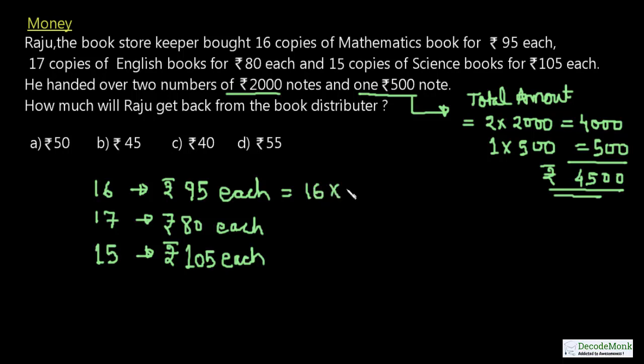The total amount required for math books is 16×95. Calculating: 16×5 = 80, and 16×9 = 144, plus 8 gives 152. This equals ₹1520.